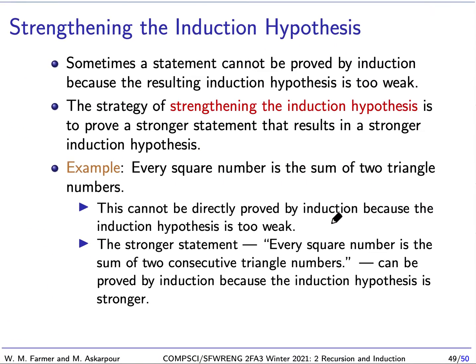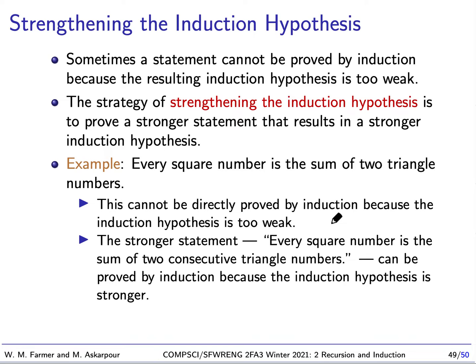The last topic is a technique called strengthening the induction hypothesis. Sometimes when you're trying to prove a statement by induction, the proof doesn't go through because your induction hypothesis is too weak — it doesn't say enough. The strategy is to prove a stronger statement, which implies the statement you're really interested in. Because it's a stronger statement, you get a stronger induction hypothesis, and the argument goes through.